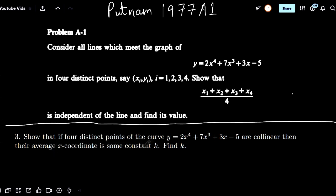It states: show that if four distinct points of the curve y equals 2x to the power 4 plus 7x cubed plus 3x minus 5 are collinear, which means they lie on the same line, then their average x-coordinate, which is this term here, x1 plus x2 plus x3 plus x4 all over 4, is some constant k. Find k.